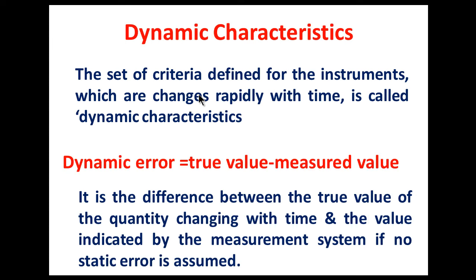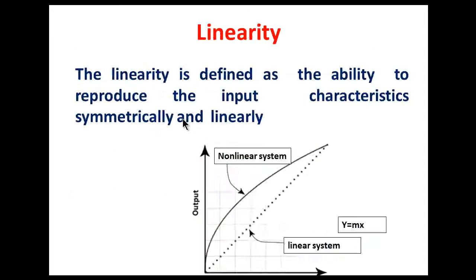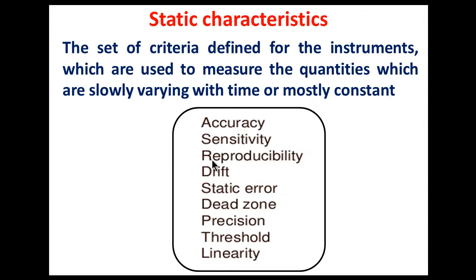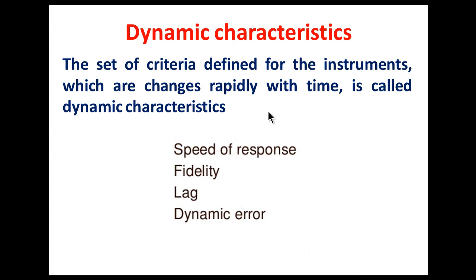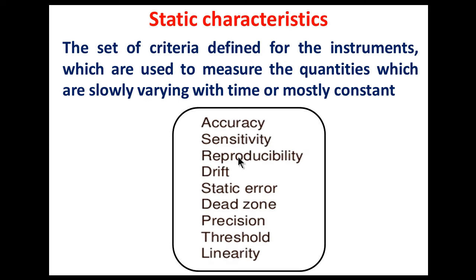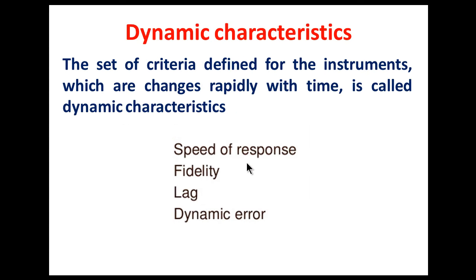So these are all the static and dynamic characteristics of an instrument. To quickly revise: static characteristics are for quantities slowly varying with time or mostly constant, while dynamic characteristics apply to quantities that change rapidly with time. Thank you very much, I hope you liked this video.